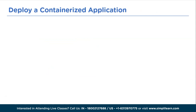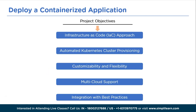The key objectives of this project include: infrastructure as code — emphasizing the use of Terraform, a declarative language, to define the desired state of the Kubernetes cluster infrastructure; automated Kubernetes cluster provisioning; customizability and flexibility; multi-cloud support — ensuring compatibility with various cloud providers; and integrating Kubernetes best practices and security standards. Key features of the project include Terraform configuration files, variable management, provider plugins, networking and security, Kubernetes deployment, continuous integration, and continuous deployment.